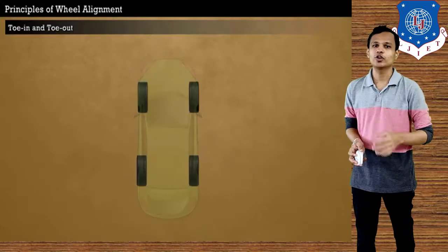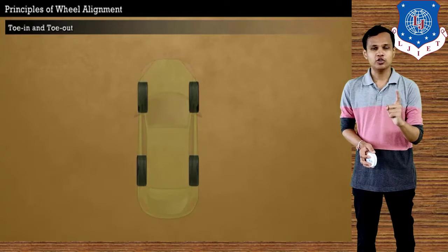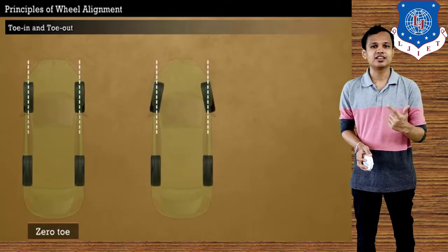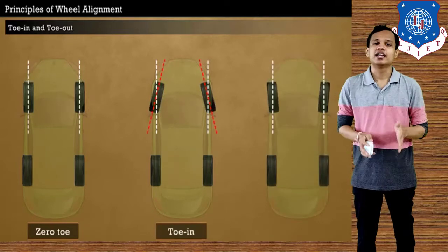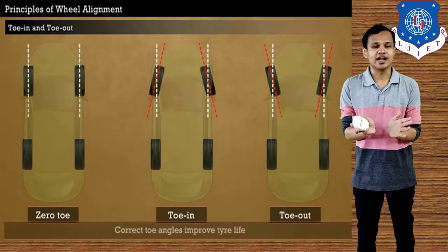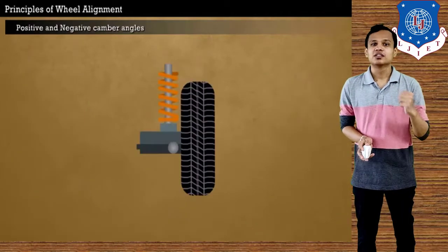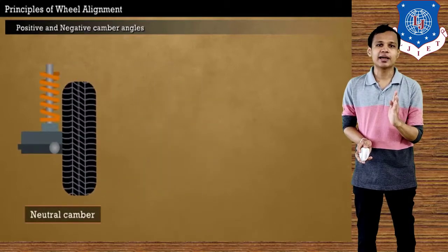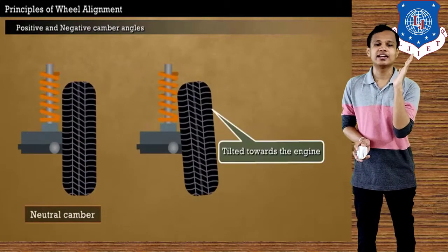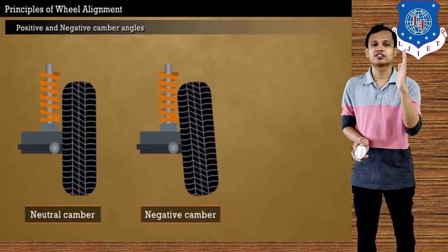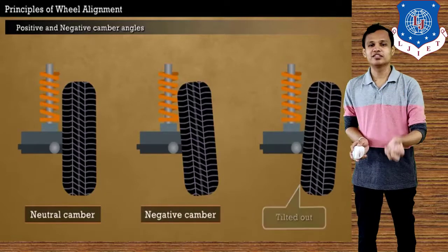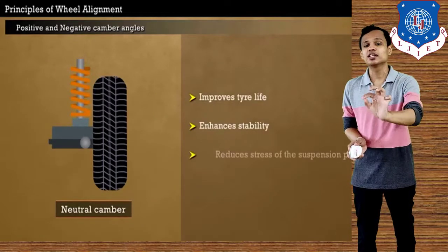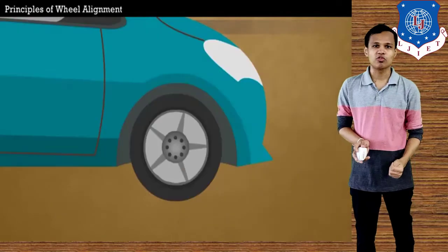For toe-in and toe-out: zero toe means there is no toe-in and no toe-out. Toe-in is when the tires are tilted inward, and toe-out is when the tires are tilted outward. Correct toe angles will improve tire longevity. For camber angle: if the tire is straight it is zero camber; if tilted inward it is negative camber; if tilted outward it is positive camber. Correct camber angle improves tire longevity and mainly improves the stability of the vehicle — proper stability will be provided if the camber angle is correct.